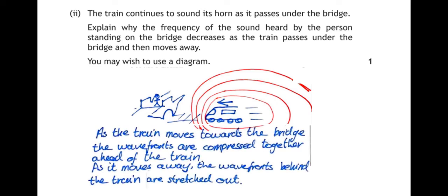So, this is my explanation. As the train moves towards the bridge, the wave fronts are compressed together ahead of the train. As it moves away from the bridge, the wave fronts behind the train are stretched out.